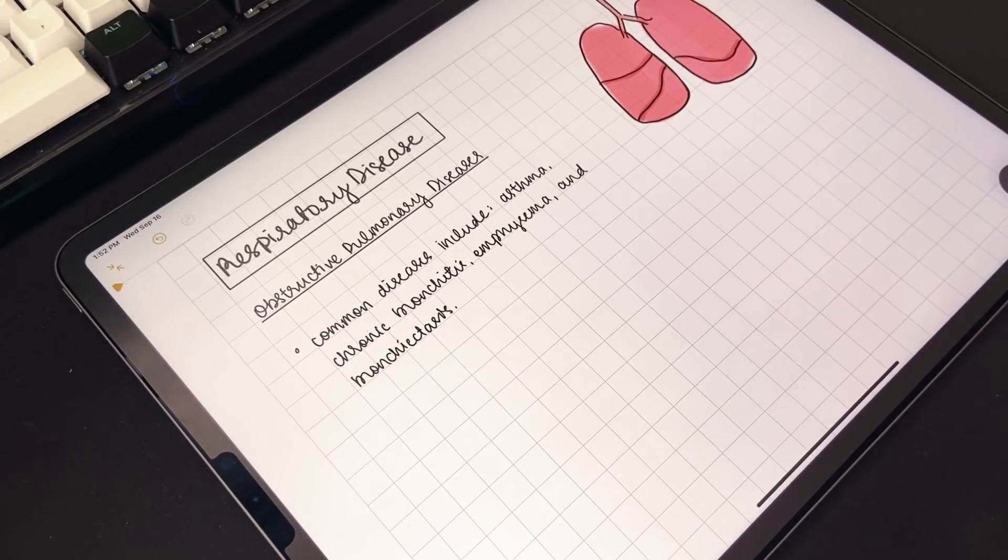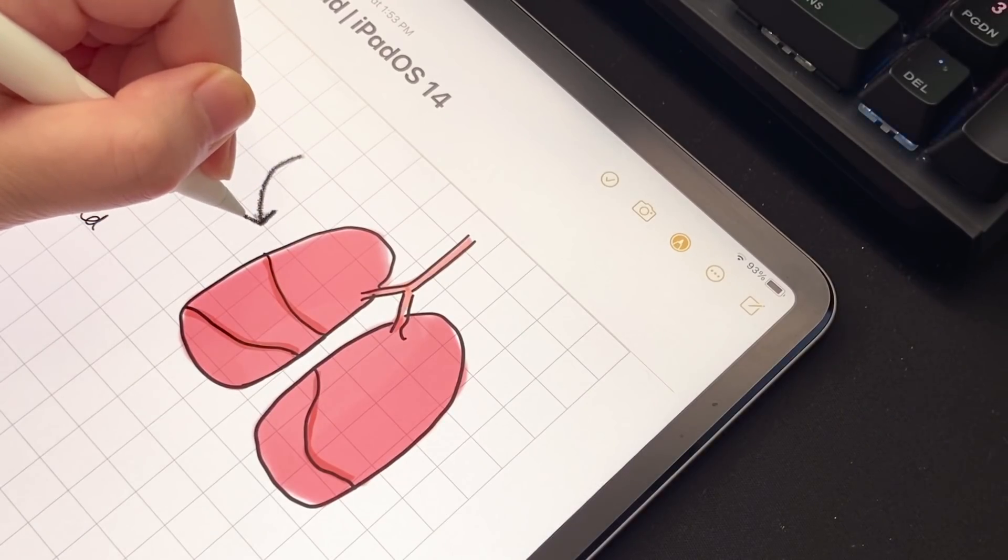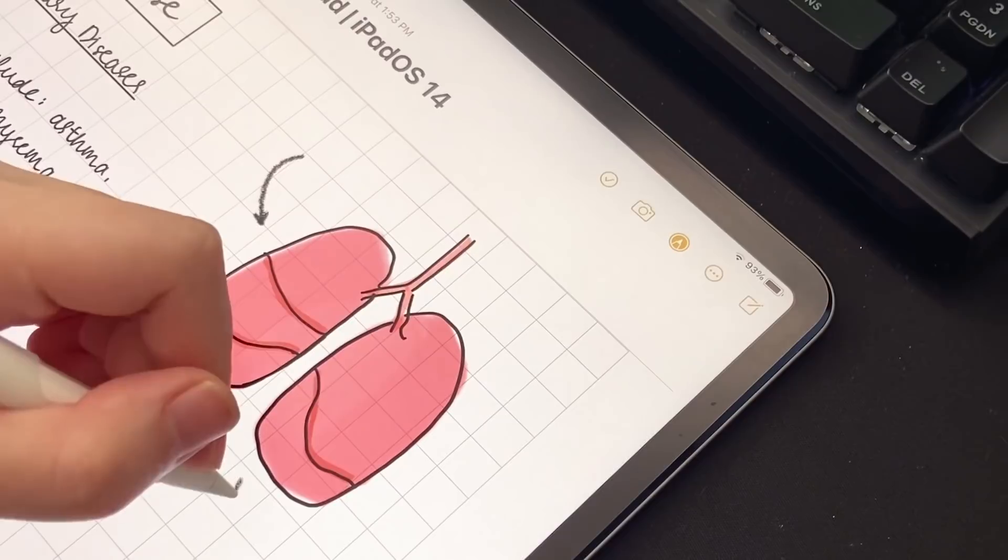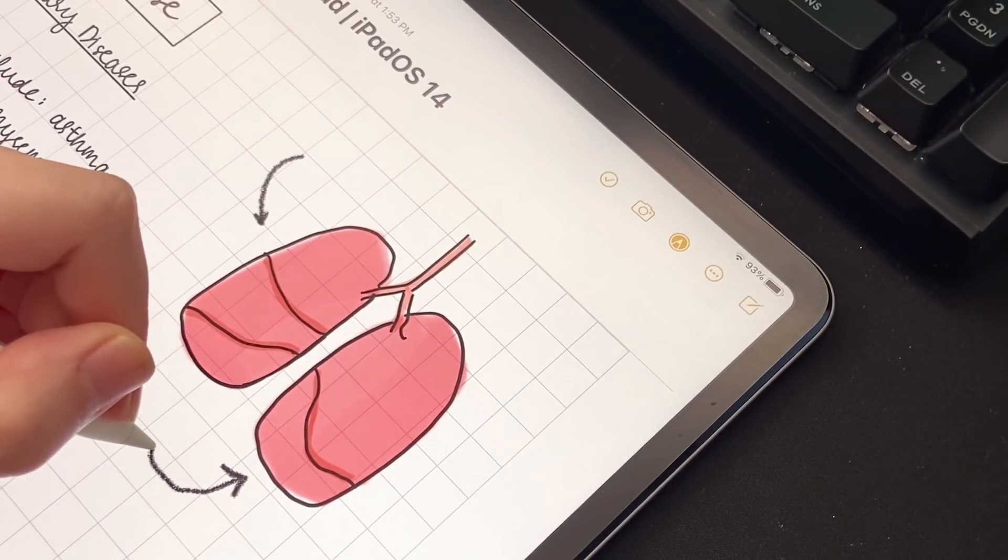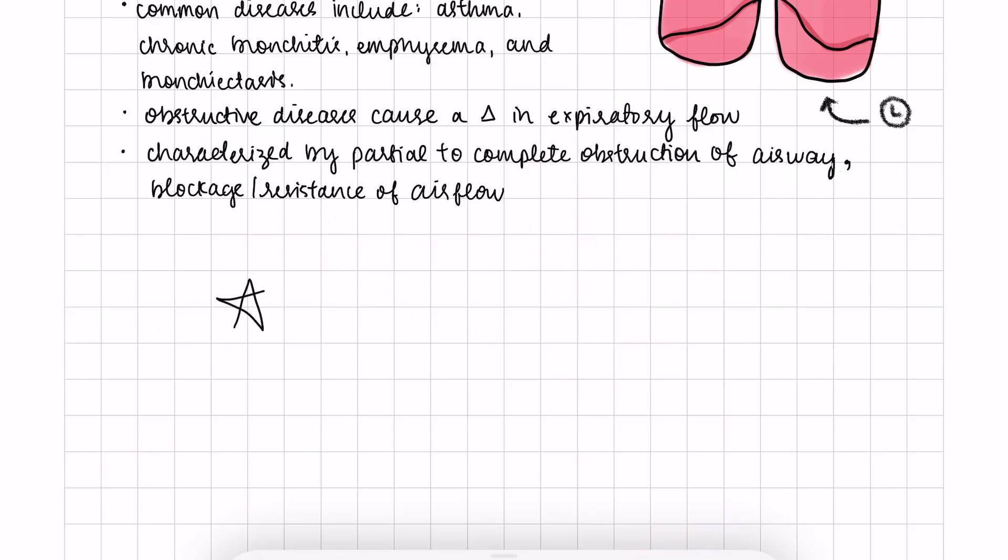First is shape recognition. Although a simple feature, you're now able to draw arrows, stars, and hearts with ease just by drawing and holding. I haven't seen the heart or star myself in other note-taking apps, so this could be neat for those who do a lot of illustrations with their notes, or if you just like to draw these for fun.